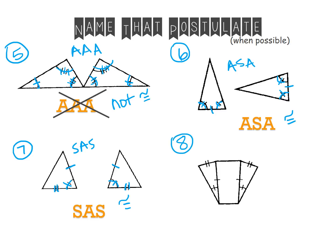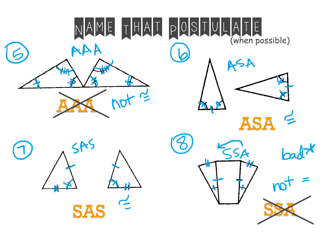In our eighth example, the first thing I see is a set of sides congruent to each other. I see another set of sides congruent to each other. And I see a set of angles congruent to each other. Now notice here, if I were to put that A up front, we would have a bad word. And we know if we have a bad word that they would be not congruent. So these two triangles in this last example would not be congruent.